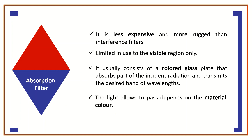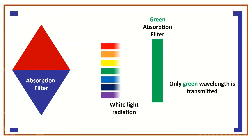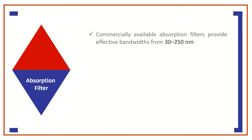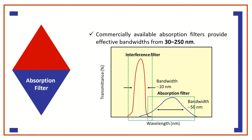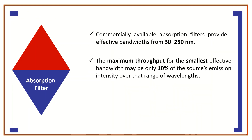The light allowed to pass depends on the material's color. For example, a green filter allows radiation in the green region to pass through it. Commercially available absorption filters provide effective bandwidths from 30 to 250 nanometers, which is wider than interference filters. The maximum throughput for the smallest effective bandwidth, however, may be only 10% of the source emission intensity over that range of wavelengths.